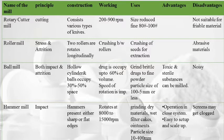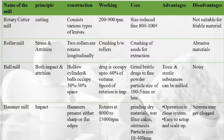Comparison table of mills: Rotary cutter mill works on the principle of cutting, with knives rotating at 200–900 rpm, producing fines between 80–100 mesh; not suitable for friable material. Roller mill works on stress and attrition — two rollers rotate longitudinally; used for crushing seeds for extraction; not used for abrasive material. Ball mill works on both impact and attrition — hollow cylinder occupying 30–50% of space; drug fills up to 60% of volume; speed of rotation is important.